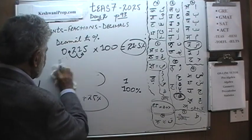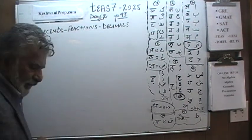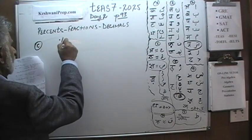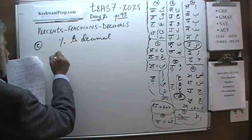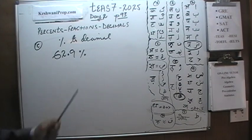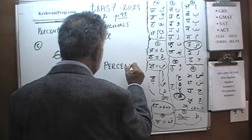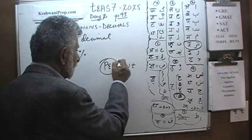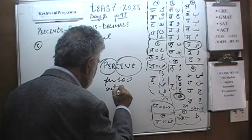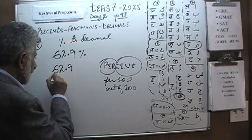Part C. In part C, we are being asked to convert a percentage to a decimal, and the percentage given to us is 62.9%. To convert a percentage to a decimal — we learned it yesterday — what does the word percent mean? The word percent literally means per 100, or out of 100. So 62.9% literally means 62.9 out of 100.